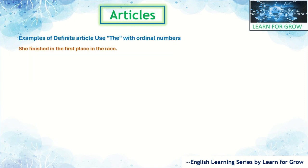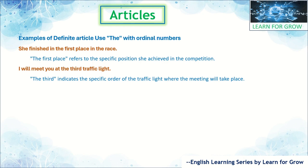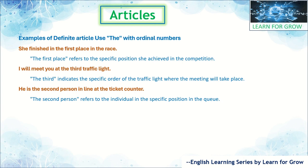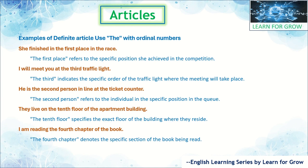Another rule: use 'the' with ordinal numbers. 'She finished in the first place in the race' — 'the first place' refers to the specific position she achieved in the competition. 'I will meet you at the third traffic light' — 'the third' indicates the specific order of the traffic light where the meeting will take place. 'He is the second person in the line at the ticket counter' — 'the second person' refers to the individual in a specific position in the queue. 'They live on the tenth floor of the apartment building' — 'the tenth floor' specifies the exact floor where they reside. 'I am reading the fourth chapter of the book' — 'the fourth chapter' denotes the specific section of the book being read.